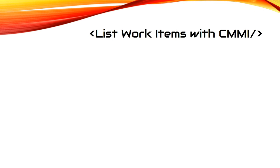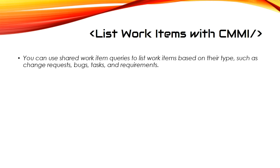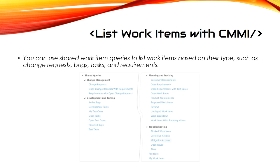To list work items with CMMI, you can use shared work item queries to list work items based upon their types, such as Change Requests, Bugs, Tasks, and Requirements. CMMI offers a lot more different types of queries than other process types. You have Change Manager shared queries, Development and Testing shared queries, Planning and Tracking shared queries, and Troubleshooting — giving you a lot more information, metric tracking, and work item queries to work with.